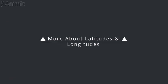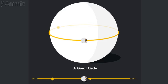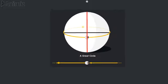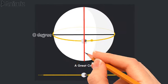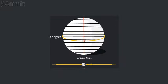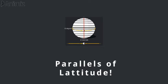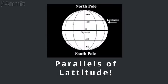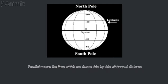Now let's learn more about the latitudes and the longitudes. Apart from the equator and the prime meridian, there are other imaginary lines drawn on the earth. Taking the equator as the base at zero degree, some more lines are drawn on the earth's surface. As these lines are parallel to the equator, they are called the parallels of latitude. Here, parallel means the lines which are drawn side by side with equal distance.